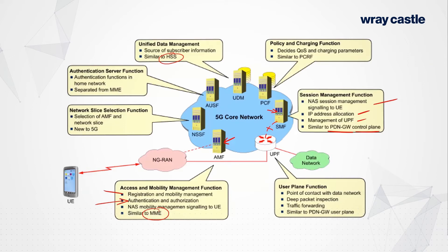For example, during the registration procedure, one thing the AMF has to do is talk to the UDM to find out about the mobile, retrieve context information to be stored at the AMF, and authorize the user to access the network. In procedural terms it sounds like LTE, and to all intents and purposes it is very similar — but because the core network uses software-based functions, the exchange is quite different. The other part of the UDM is the Authentication Center — the part of the network that knows all the secret numbers that only the UE or SIM card knows.